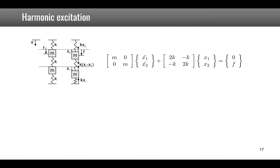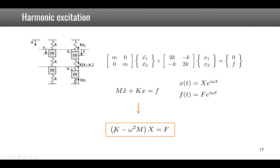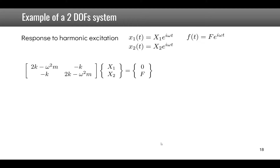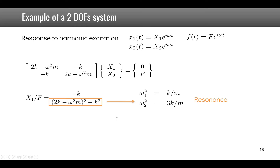To solve for displacement under harmonic excitation in a two DOF system, we assume x(t) = X·e^(iωt) and f(t) similarly. Substituting gives (K − ω²M)X = F. For the two DOF system, x1/F has a denominator that equals zero at the resonance frequencies we computed for the free response.